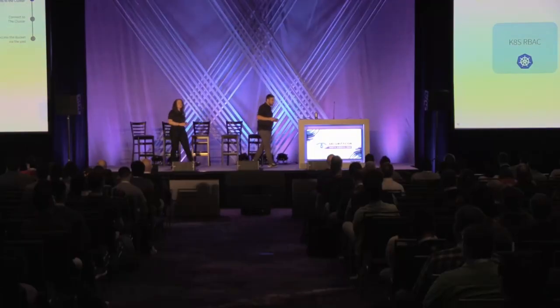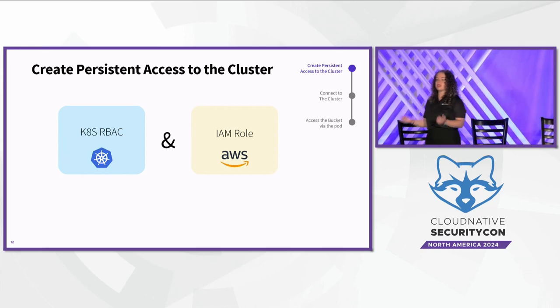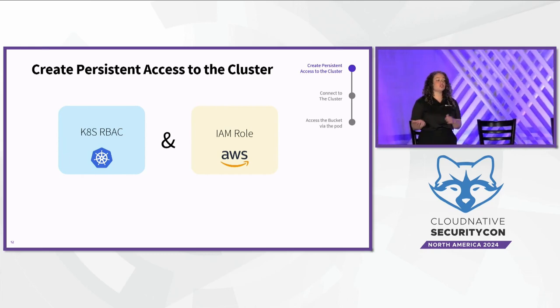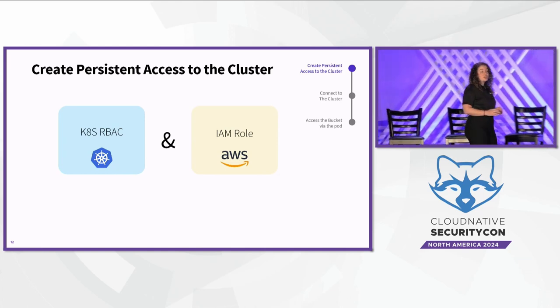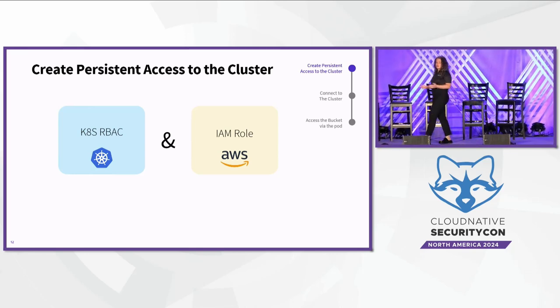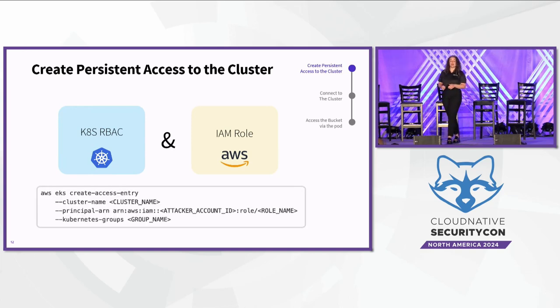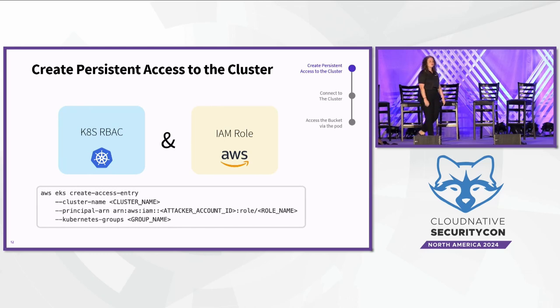The first indicator of attack focuses on creating persistent access to the cluster — establishing a valid connection and being able to authenticate. In plain Kubernetes, we have two primary methods of authentication: service accounts managed by Kubernetes, and simple users. Managed Kubernetes services offer out-of-the-box OpenID Connect integration with their identity provider. In AWS, you can bind an IAM role with Kubernetes RBAC permissions through the EKS API. This feature is called access entry. You can see a CLI command for creating an access entry to a Kubernetes cluster. After executing this command, you will be able to authenticate to the cluster using your IAM role. Threat actors can use this feature to create persistent access to your cluster.